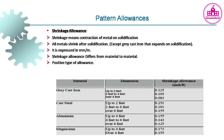Shrinkage allowance accounts for contraction of metal on solidification. All metals shrink after solidification. It is expressed in millimeters per meter. Shrinkage allowance differs from material to material and is a positive type of allowance.